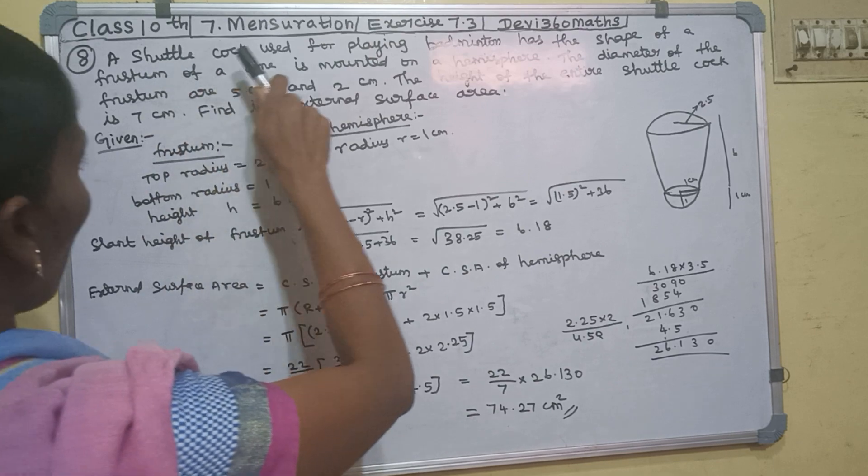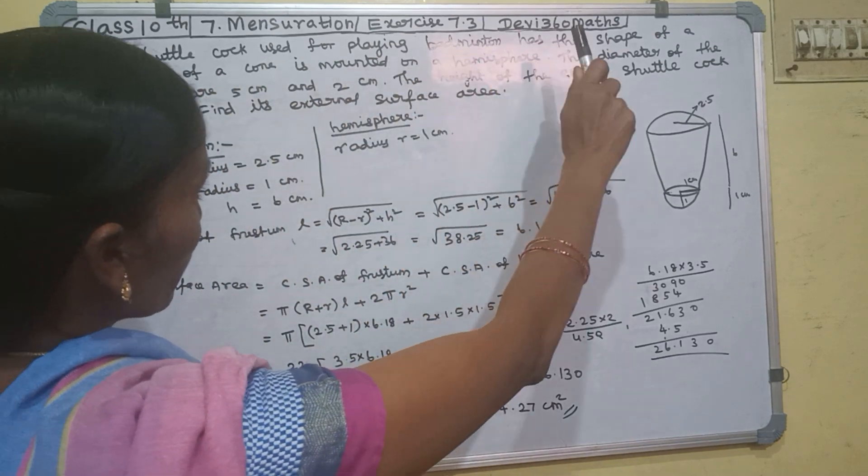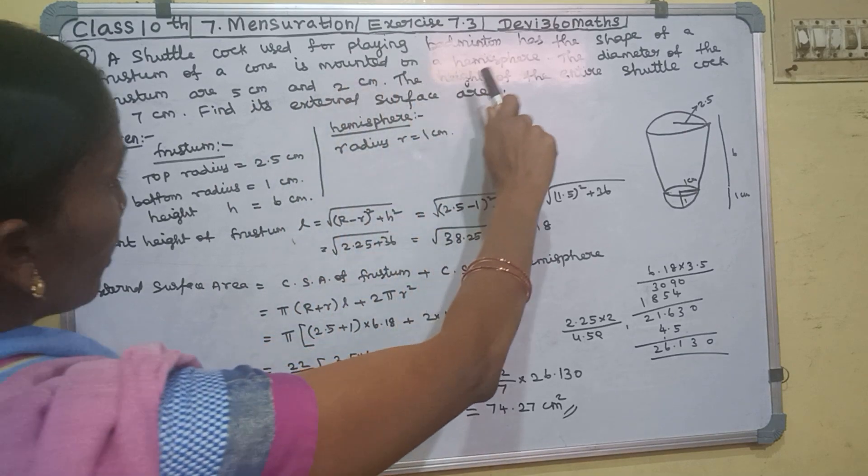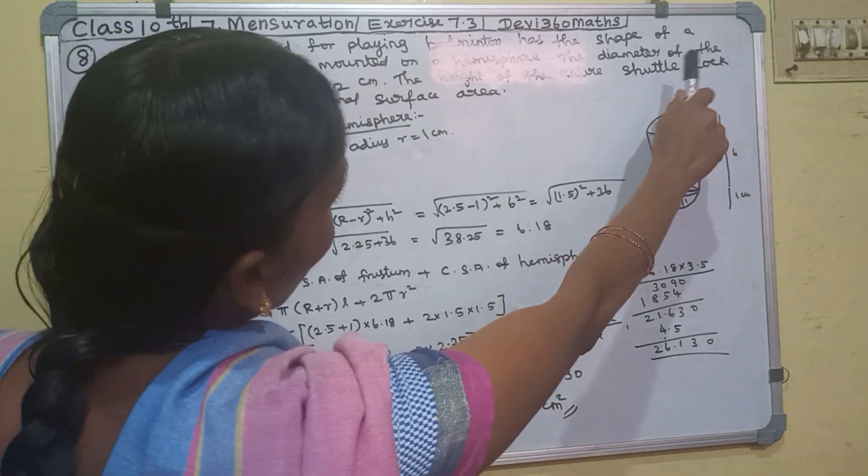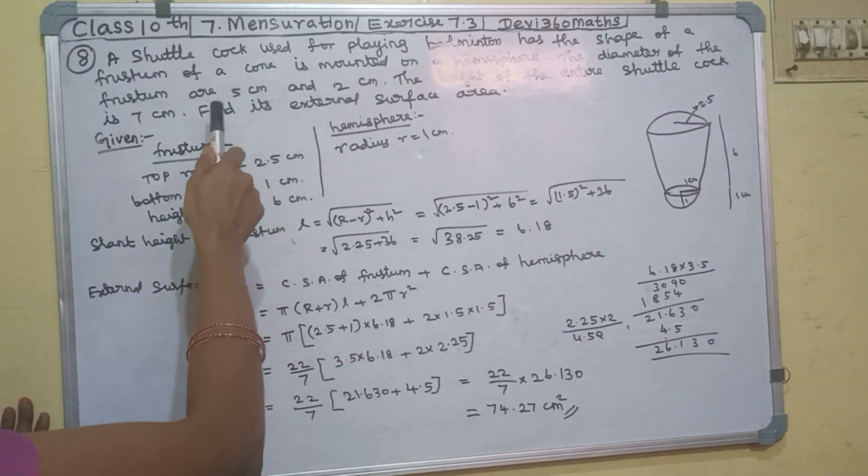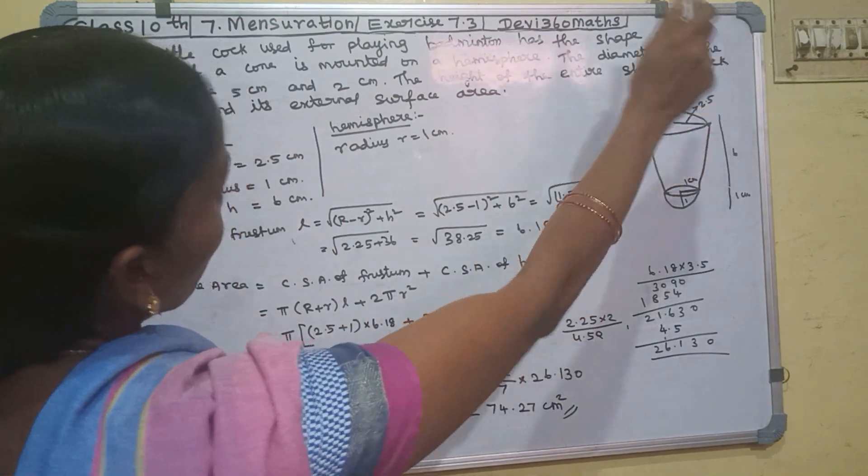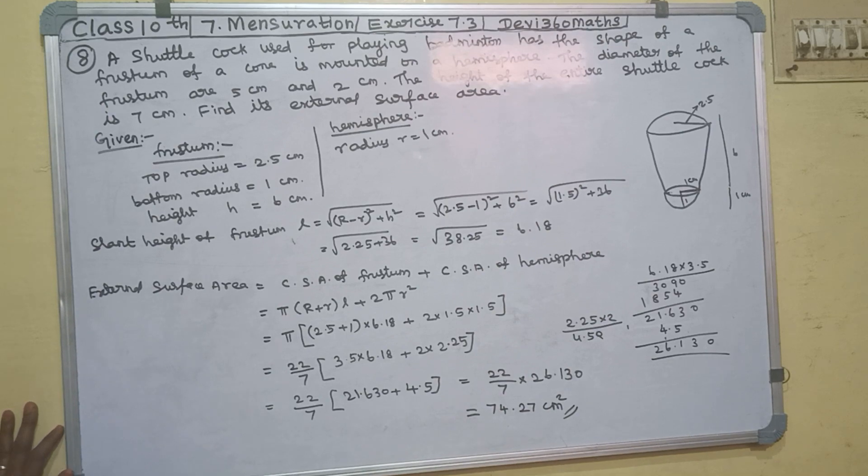A shuttlecock used for playing badminton has the shape of a frustum of a cone mounted on a hemisphere. The diameters of the frustum are 5 cm and 2 cm. The height of the entire shuttlecock is 7 cm. Find its external surface area.